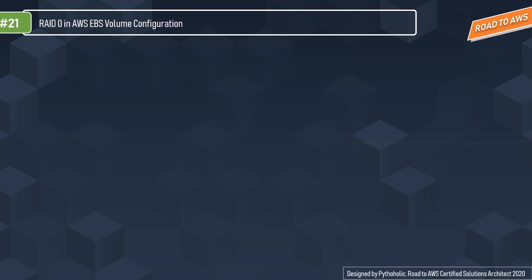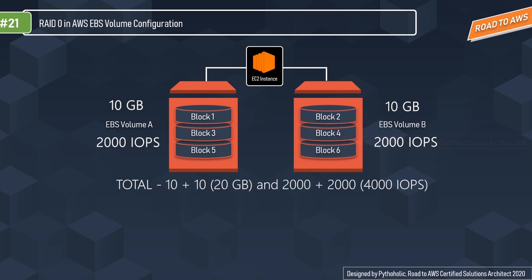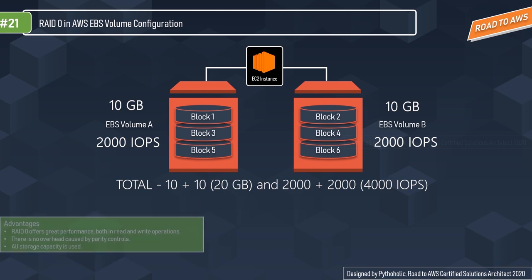Of all these RAID configurations, only RAID 0 and RAID 1 are discussed for AWS EBS and are important for the exam. You might ask why RAID is needed if EBS volumes are already replicated across availability zones — but RAID is useful if you want to increase IOPS or maintain a mirror replica. In EBS RAID 0, data is striped across two or more EBS volumes, combining them into one logical volume. So if you have 10 GB at 2000 IOPS per volume, the combined result is 20 GB and 4000 IOPS.